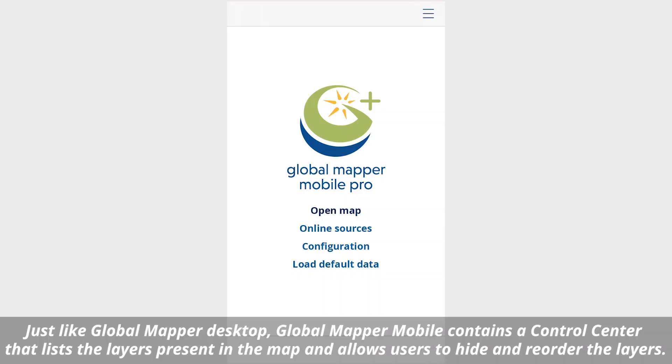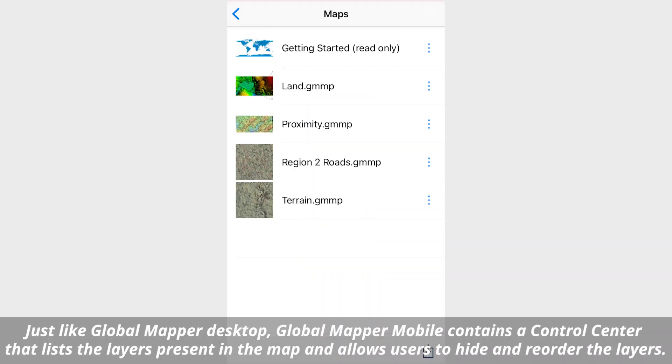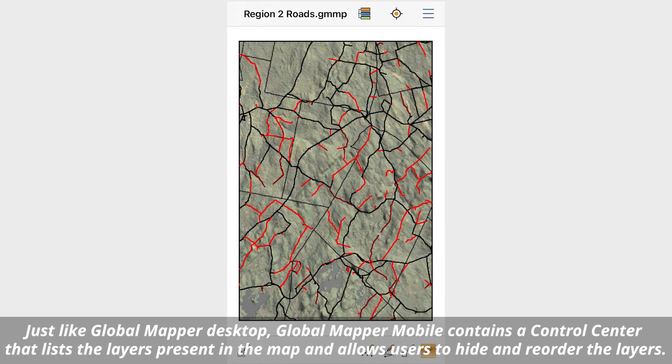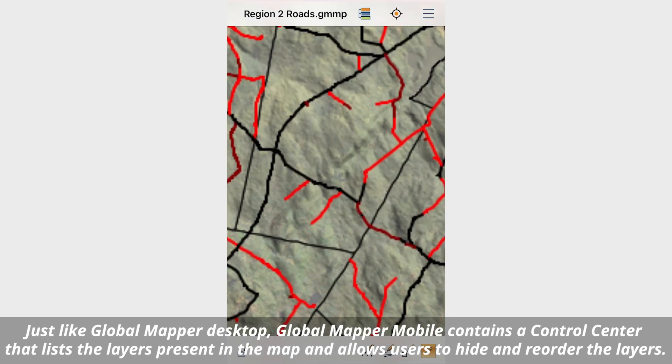With a Global Mapper Mobile package transferred to a mobile device, this file can be opened directly through the Global Mapper Mobile app.